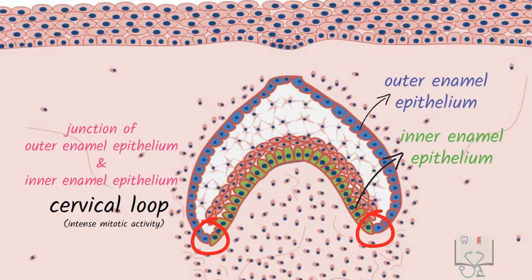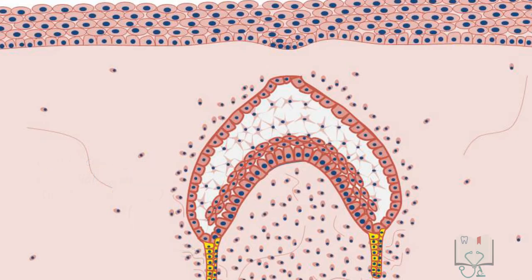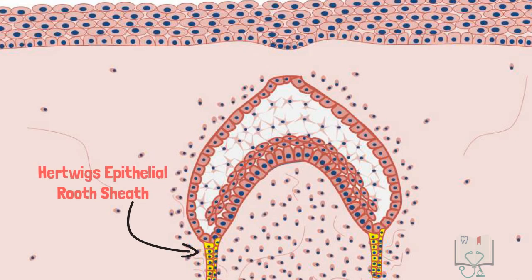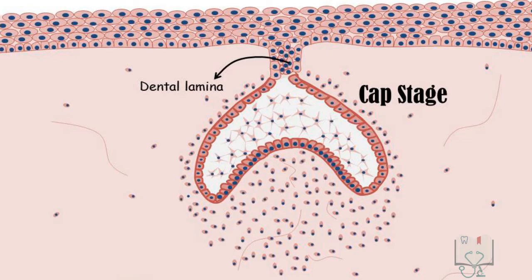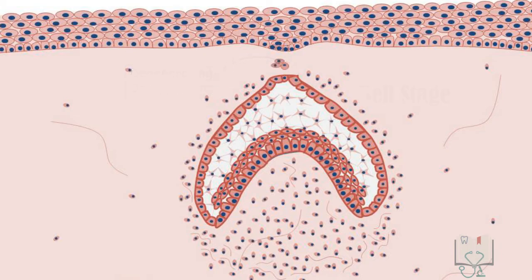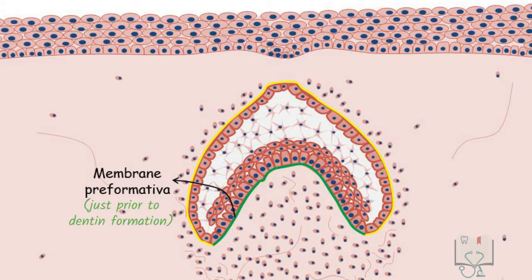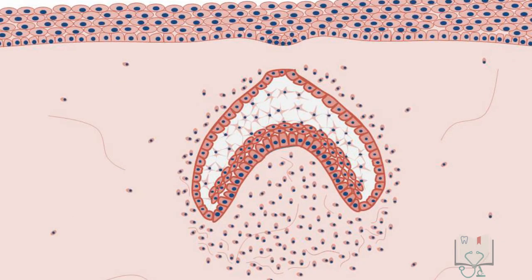From the cervical loop, a double cell-layered extension develops in the advanced bell stage, called Hertwig's epithelial root sheath. In the bell stage, the dental lamina, which attaches the enamel organ to the oral ectoderm, starts undergoing degeneration, though some epithelial remnants may remain, known as cell rests of Serres. A basement membrane separates the enamel organ from the ectomesenchyme; this basement membrane is called membrana preformativa, present just prior to dentine formation.